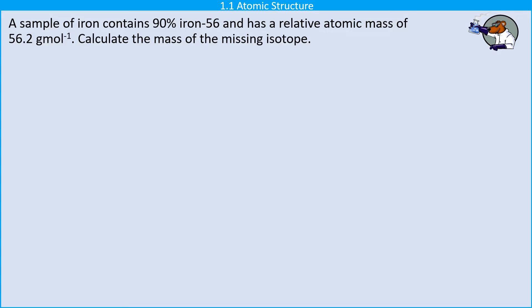Right from GCSE you were familiar with this concept that we could work out the relative atomic mass of a particular sample by looking at the different isotopes and what their relative abundance were and creating a weighted average.